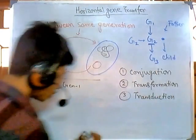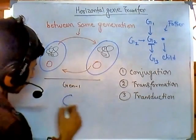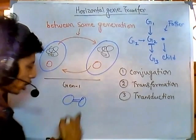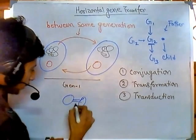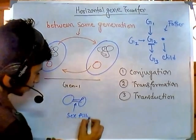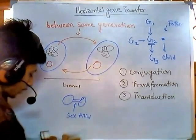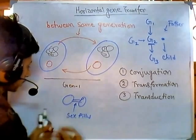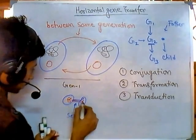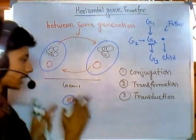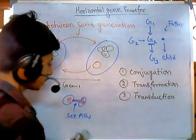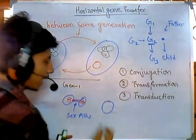In conjugation, two bacteria come into very close contact with each other. They form a sex pilus — a sex tunnel between themselves — and through this tunnel they transfer their genetic material. That process is called conjugation.